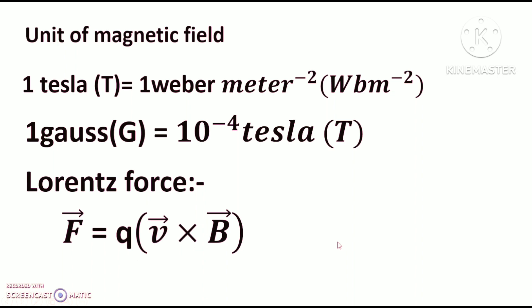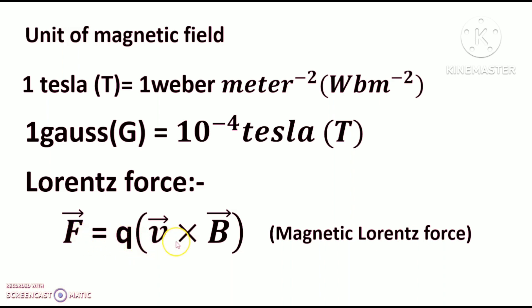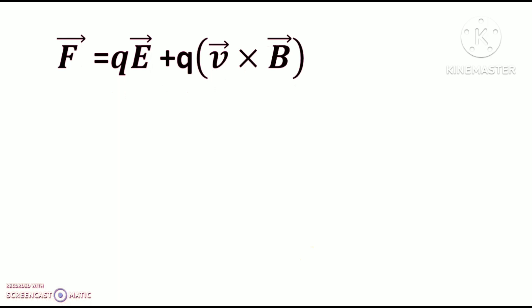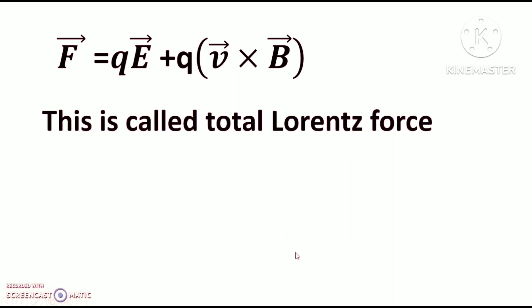Lorentz force: When a charge Q moves with velocity V inside a magnetic field of strength B, the force on the charge is F = Q(V cross B). This is called the magnetic Lorentz force. If an additional electric field of strength E also acts, then the total force on charge Q is given by F = qE + q(V cross B). This is called the total Lorentz force on the charge.